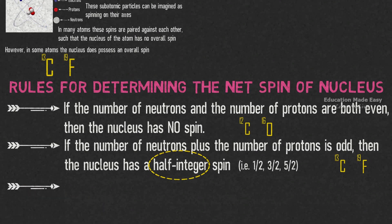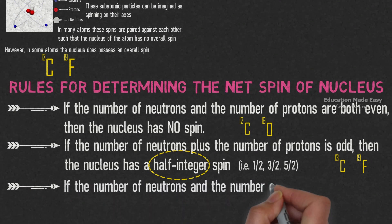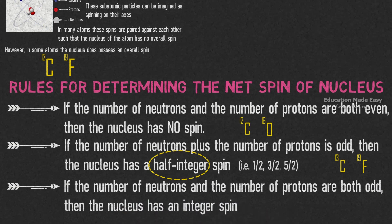Rule number 3: If the number of neutrons and number of protons are both odd, then the nucleus has an integer spin. That is, 1, 2, 3, etc.